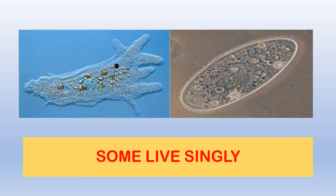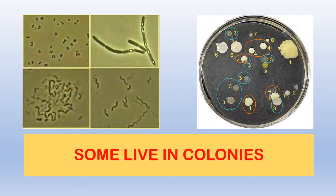For example, as you can see here, this is amoeba and this is spermaceum — these microorganisms live individually. Whereas there are certain microorganisms which live in groups, which we say live in colonies. You can see here the different colonies of microorganisms.